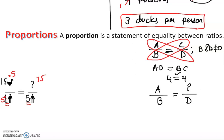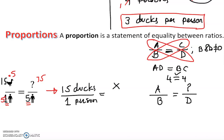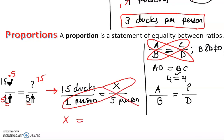But I can use the same concept with proportion. Setting it up: 15 ducks over 1 person equals x ducks over 5 persons. Cross multiplying: x times 1 equals 5 times 15, which is 75. The person units on the bottom are the same, so they cancel out, and the unit left is ducks.